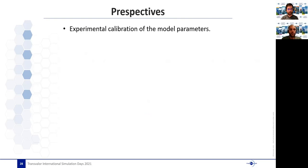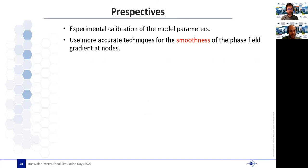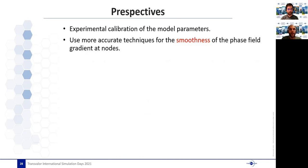We have some perspectives. First, experimental calibration of the model parameters is important in order to have physically relevant mechanical or physical behavior from the model. Next, we also need to develop more accurate techniques for the phase field gradient smoothness in order to have a better description of the identified crack surfaces. And I would like to end my presentation with this animation where we have a cube filled with random holes subjected to complex loading conditions where we can see that our algorithm is able to predict complex initiations and propagation of crack surfaces where we can see there is a merging between different branches leading to the final failure of the material.